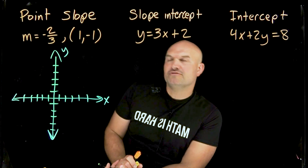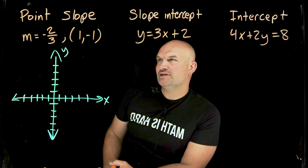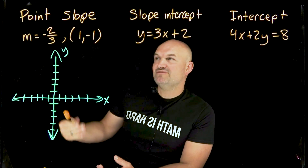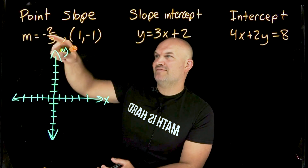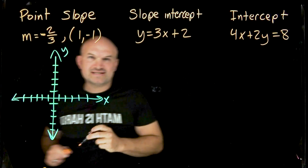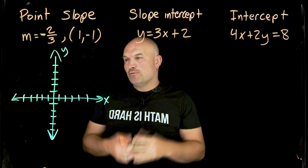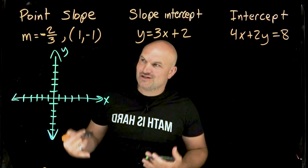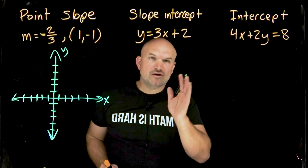When first learning how to graph a line, one of the first things we learn is point-slope form. We identify where the point is on the coordinate grid and then use the slope to find our next point. When graphing a line we only need two points, but for this instruction I'll find at least a couple of points, especially for the first two examples.